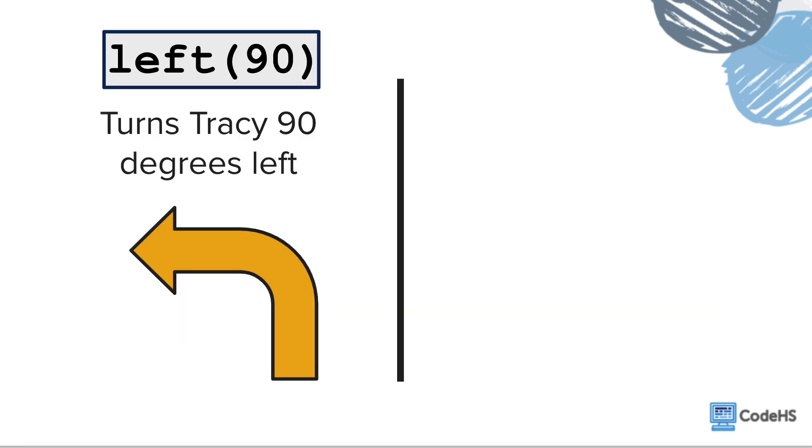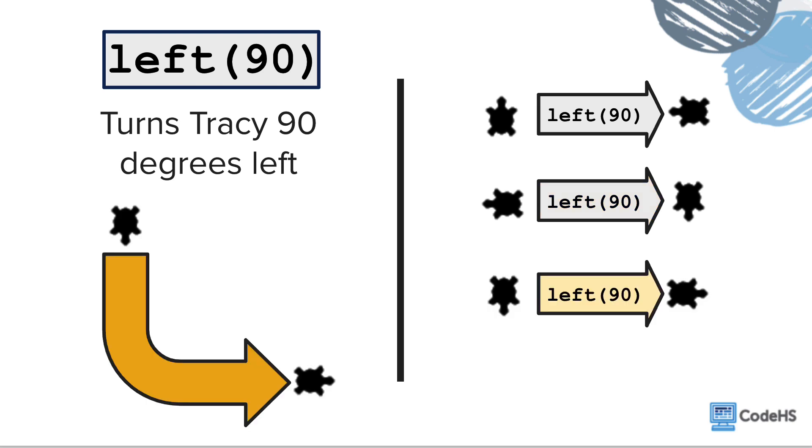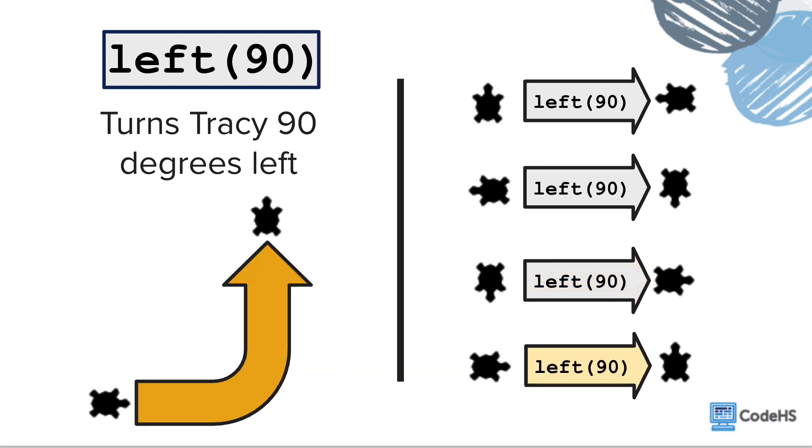If we want Tracy to turn to face a different direction before she moves, one command we can use is the left command. To call this command, we write left and then inside parentheses, enter the number 90. This will turn Tracy left 90 degrees from the direction she is currently facing. Let's look at some examples. If Tracy is facing up and we call this command, she will turn 90 degrees and will end facing left. If she's facing left and we call this command, she will end facing down. If she's facing down and we call this command, she will finish facing right. And if Tracy is facing right and we call this command, she will end facing up.